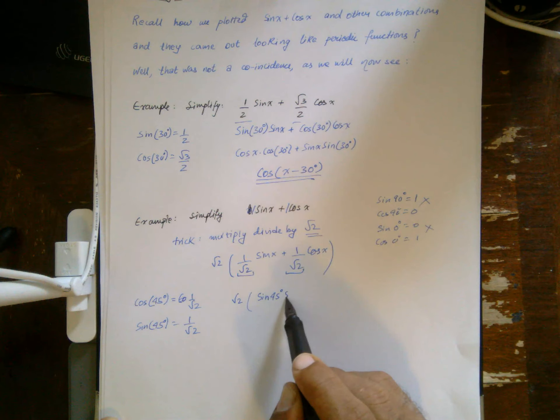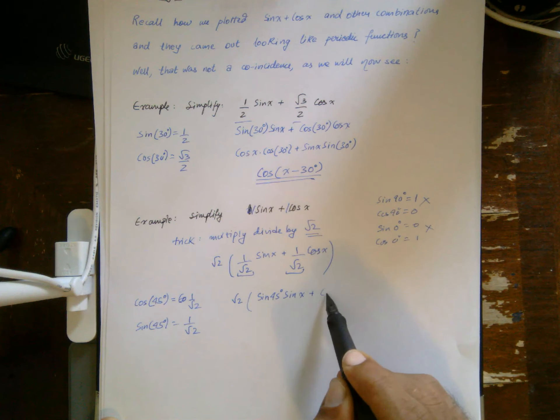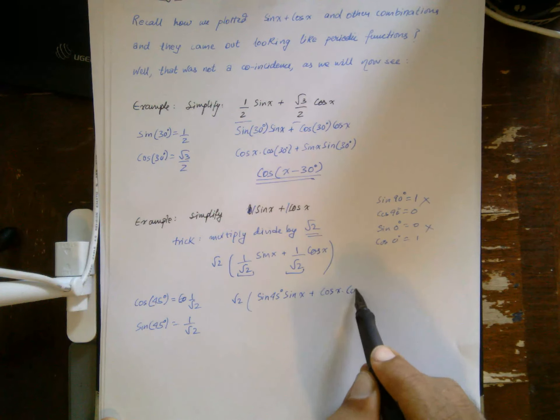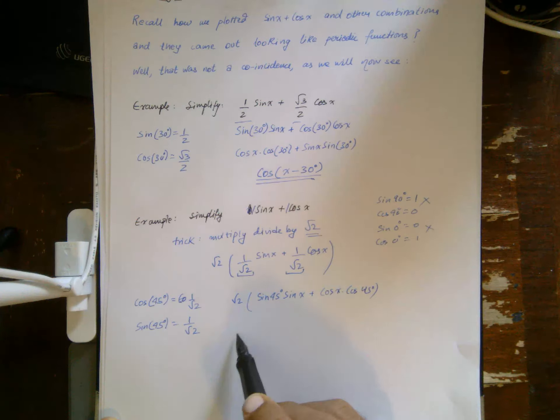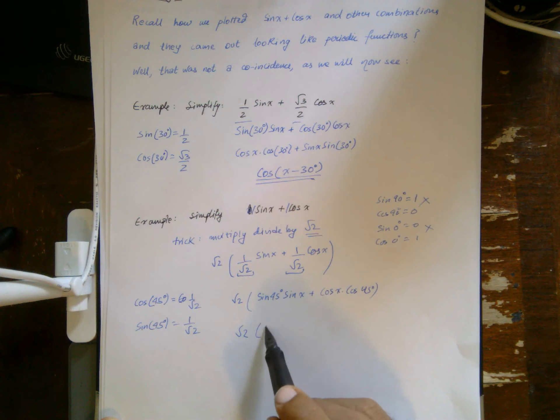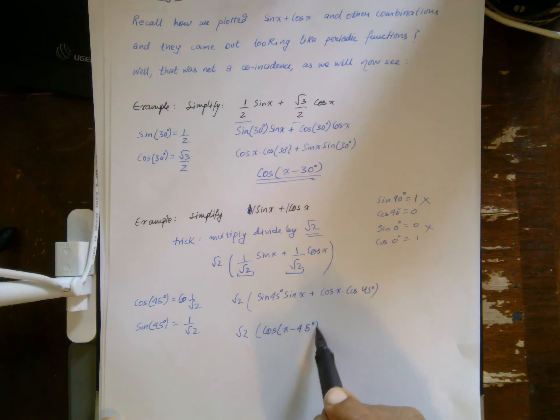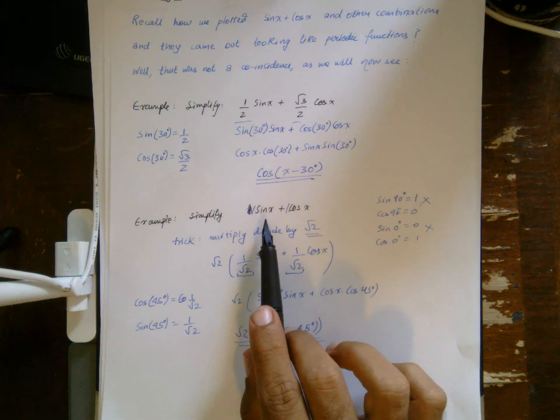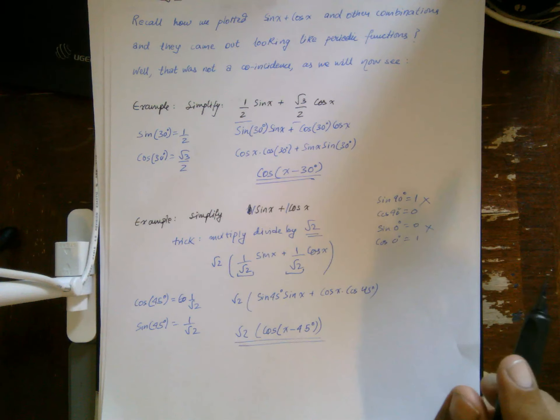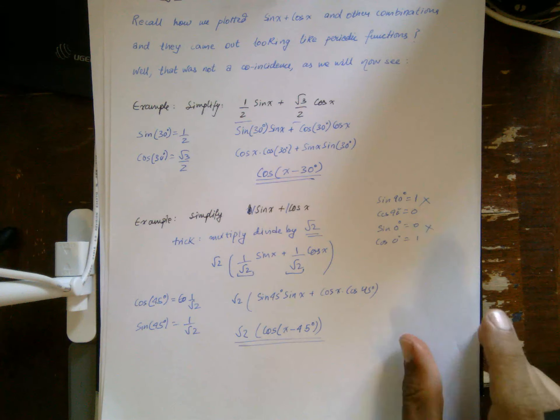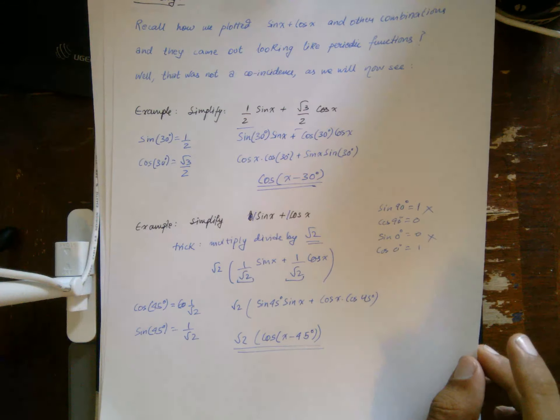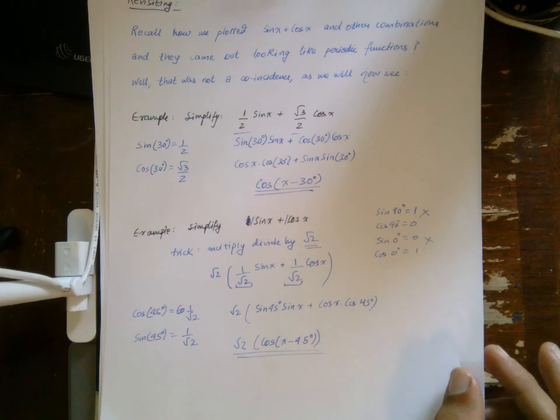So I can write this as root 2 sine 45 sine x plus cosine x cosine 45, which by the same identity as above becomes cosine of x minus 45 degrees. Which is why when we looked at the plot of sine x plus cosine x, it looked like a sine or a cosine curve. It looked periodic, and that's the reason.